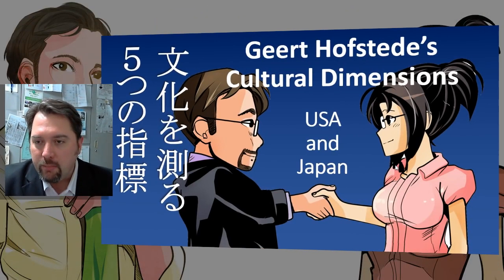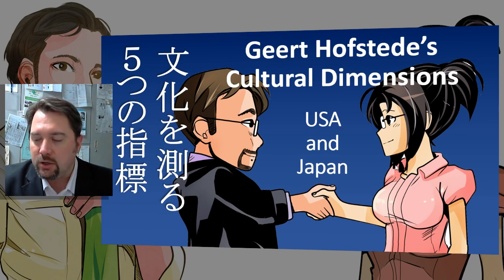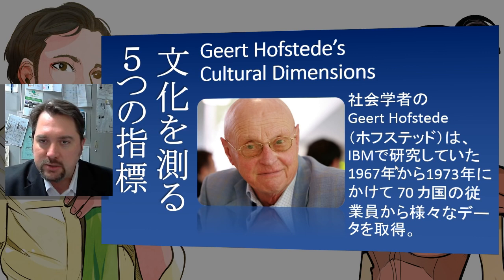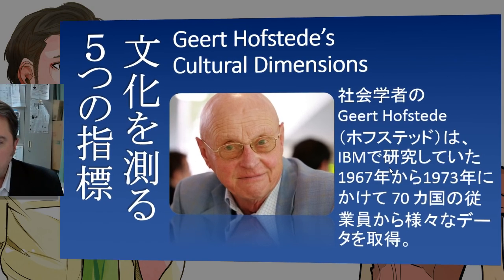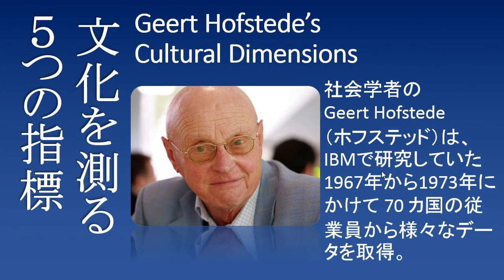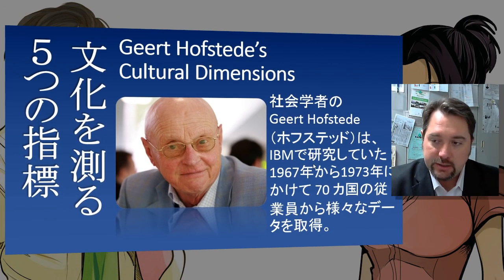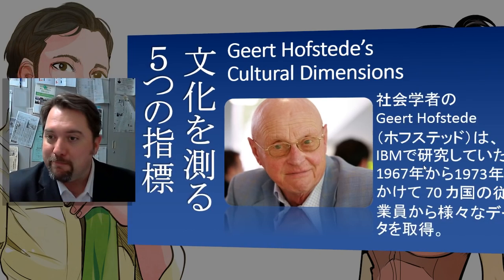I'm going to be using Gert Hofstede's cultural dimensions. Gert Hofstede developed these cultural dimensions as a way to measure different values, customs, and importances between cultures. He did most of this important work at the IBM research labs between 1967 and 1973, where he used these five cultural dimensions to compare 70 countries around the world. Today we're going to be looking at Japan and the United States.